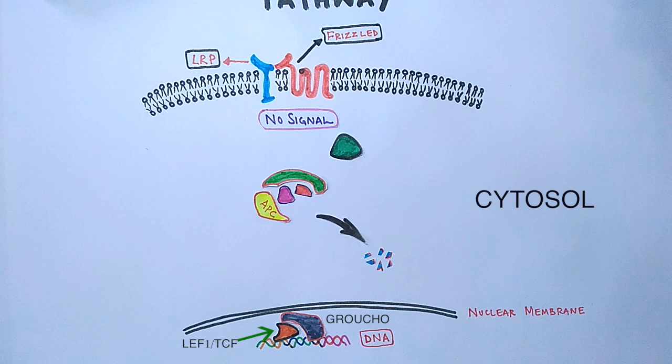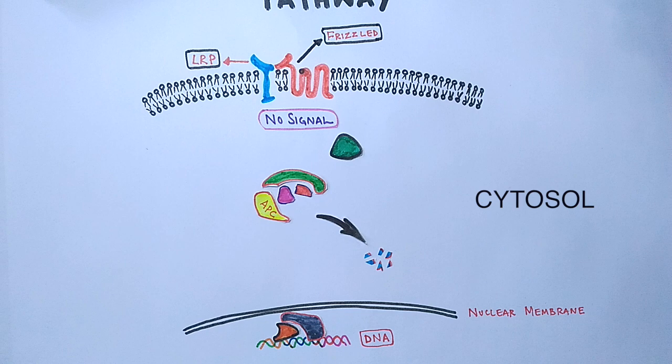To get the expression of WNT genes, the beta-catenin is needed to displace the GROUCHO complex. But in absence of WNT signal, as shown in this pathway, the beta-catenin fails to migrate into the nucleus as it is subjected to degradation by proteosomes.